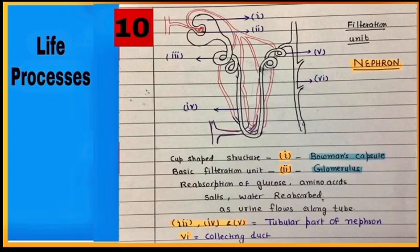From filtrate, glucose, amino acids, salts, and water are absorbed by tubular part of nephron. Urine is ultimately collected in collecting duct.